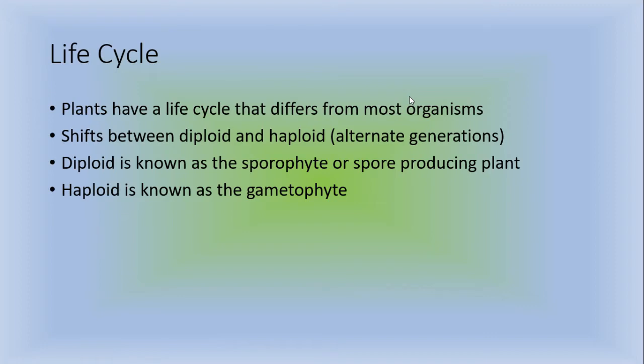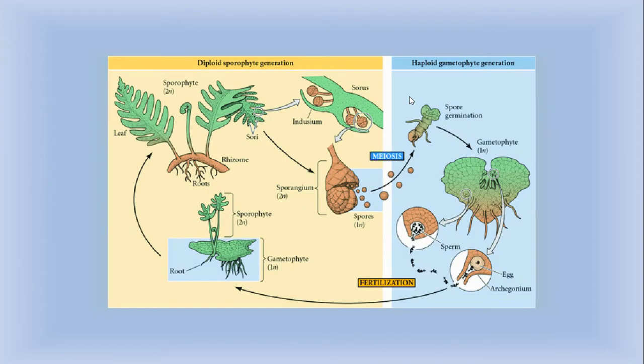Life cycle. Plants have a life cycle that differs from most organisms. It shifts between diploid and haploid so they alternate generations. Diploid is known as the sporophyte or spore producing plant, and the haploid is known as the gametophyte. And this is what a basic life cycle would look like in the diploid stage versus the haploid stage. So meiosis is haploid, that's where the sperm and egg are going to be formed. And then fertilization occurs and the diploid stage is actually the plant growing.